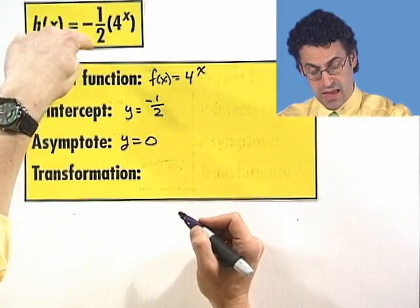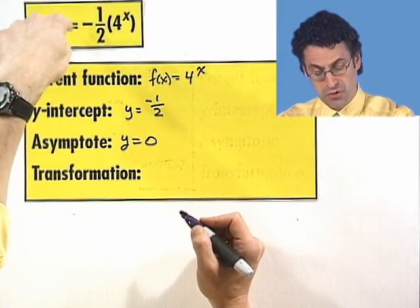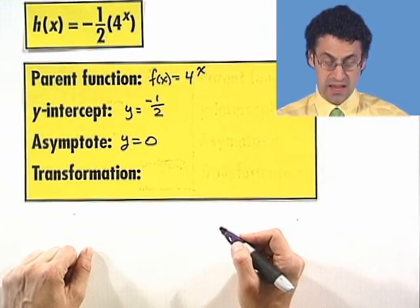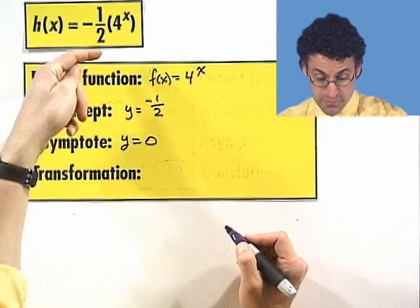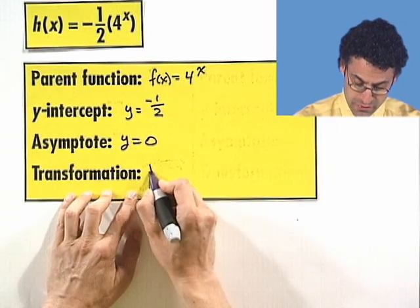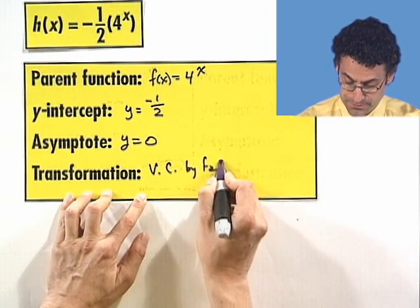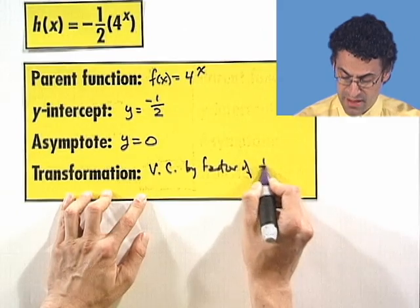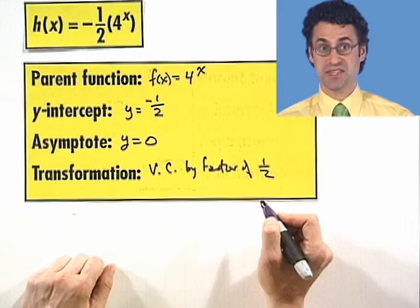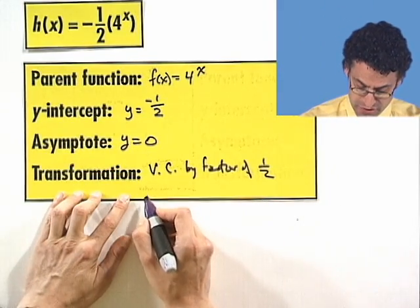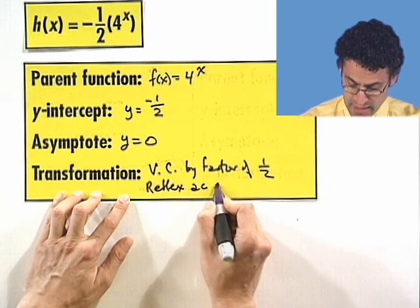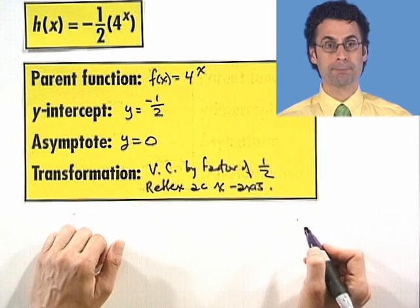Because I see that, in fact, what's going on here? Well, this is just a scalar being multiplied, a constant multiple of the parent function. And so what we see is a vertical compression, because this number is a half. So we have a vertical compression by a factor of a half. But there's that negative sign there. So what does that do? Well, that's a reflection across the x-axis. So we reflect across the x-axis. So also a reflection across the x-axis.